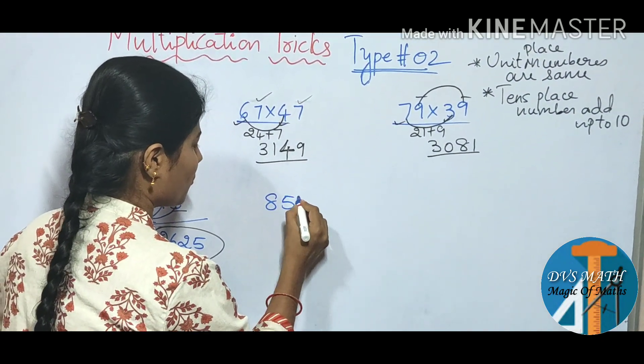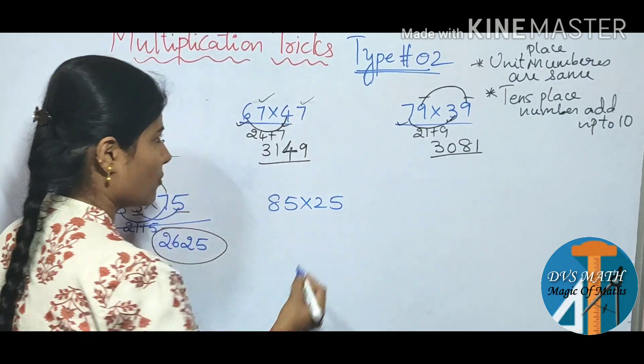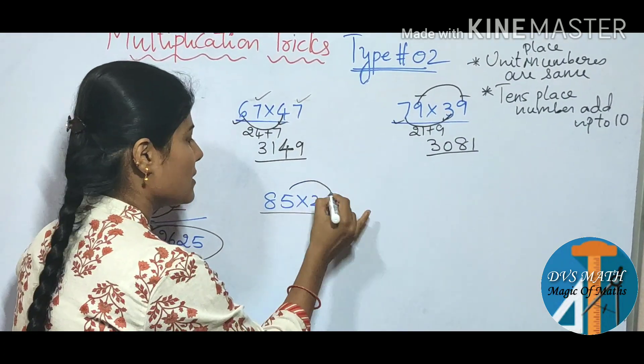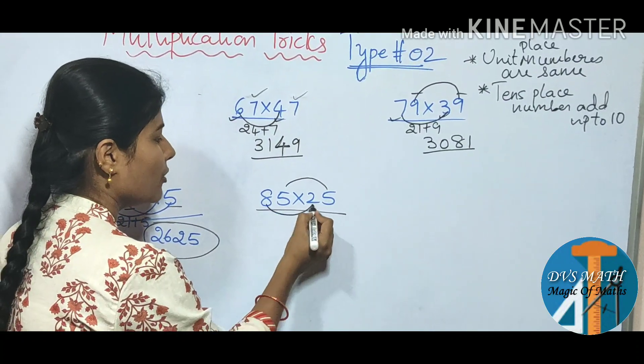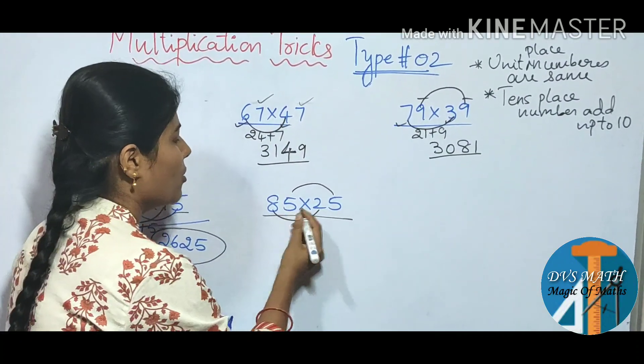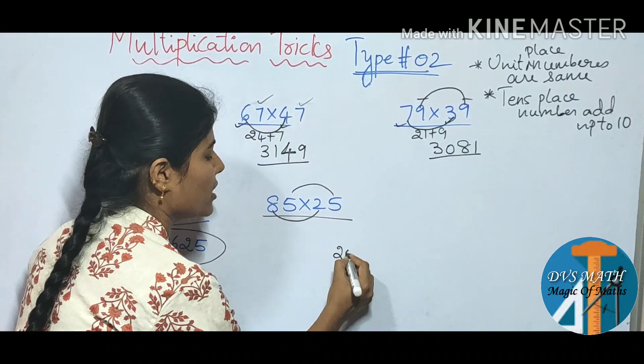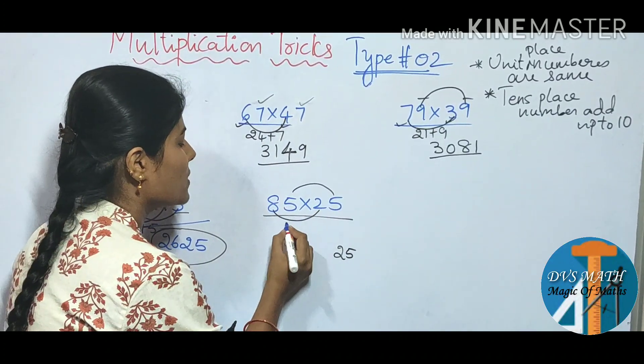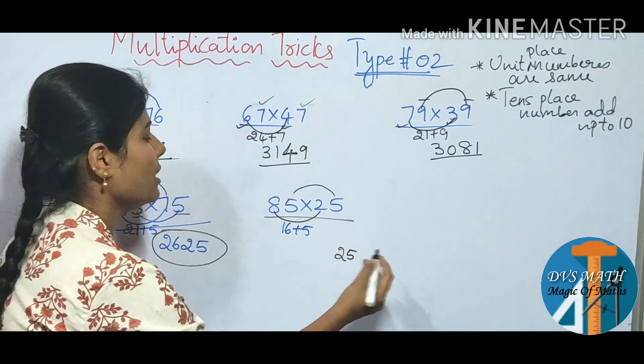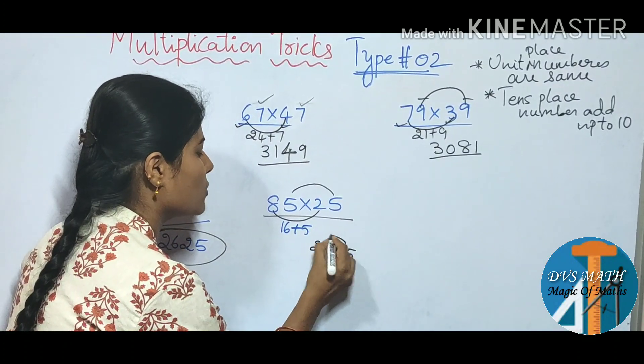85 into 25. Last digit same. You add the 10. So apply. 5 5s are 25. 8 2s are 16. 16 plus 5, 21. So 2125.